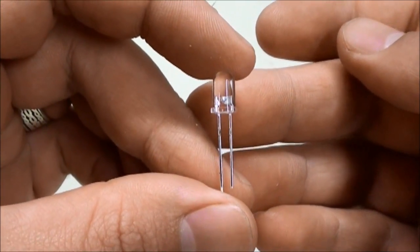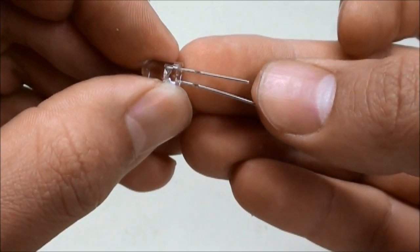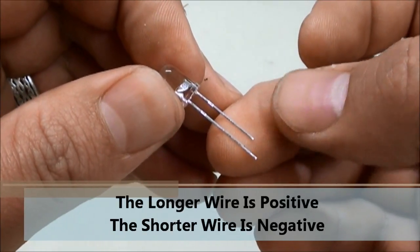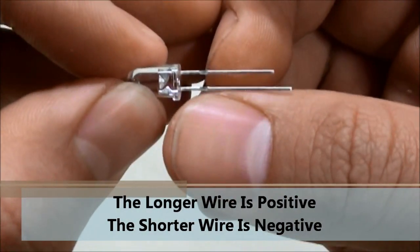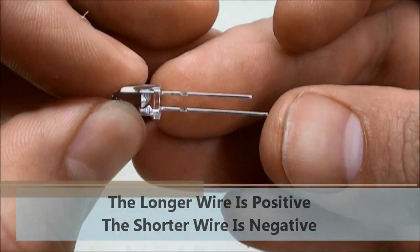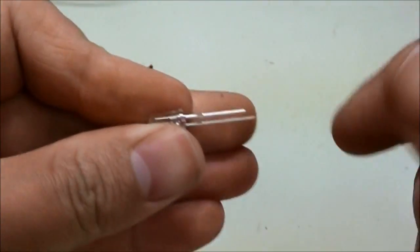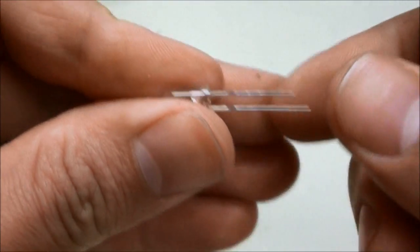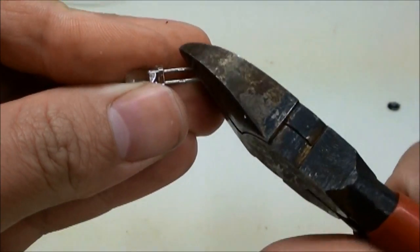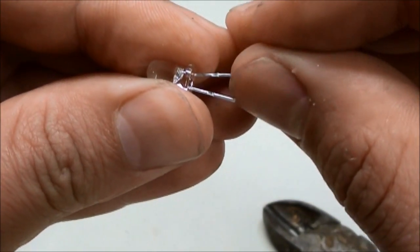The first step is soldering the LED onto the wire. Now just a quick fact: if you ever wonder which one's the positive and which one's the negative, the longer wire is always going to be positive and the shorter wire is always going to be negative. Just so you don't get mixed up, the wires do not need to be that long, so you're going to have to cut them. Just be sure to cut them at an angle. That way you still know which one's negative and which one's positive.